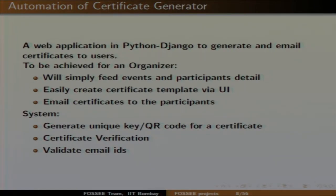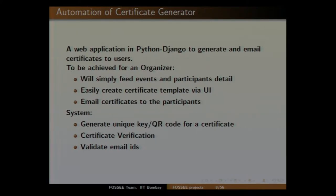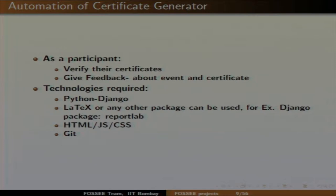The system should keep the authenticity of the certificate. It should generate a QR code for each certificate — the QR code will be unique — and using the QR code you can verify the certificate. There should also be validation of email IDs, and as a participant you can verify certificates and give feedback about events. Technologies required: Python Django, LaTeX for creating certificates or any other package such as ReportLab. You should also have knowledge of HTML, JS, CSS, and Git.